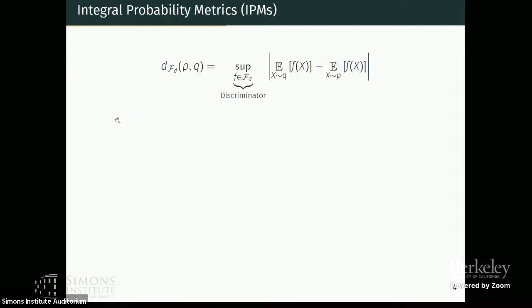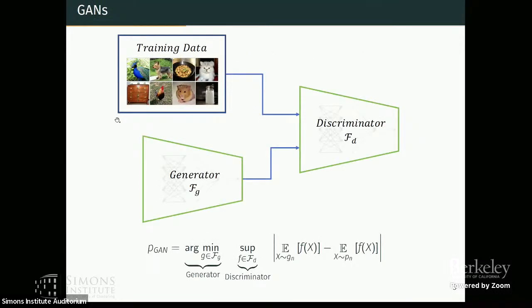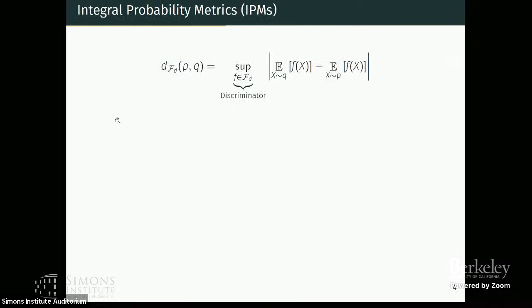And then, you can see that the discriminator induced max discrepancy can just be thought of as a metric on the space of probability distributions. And so these are usually called integral probability metrics.